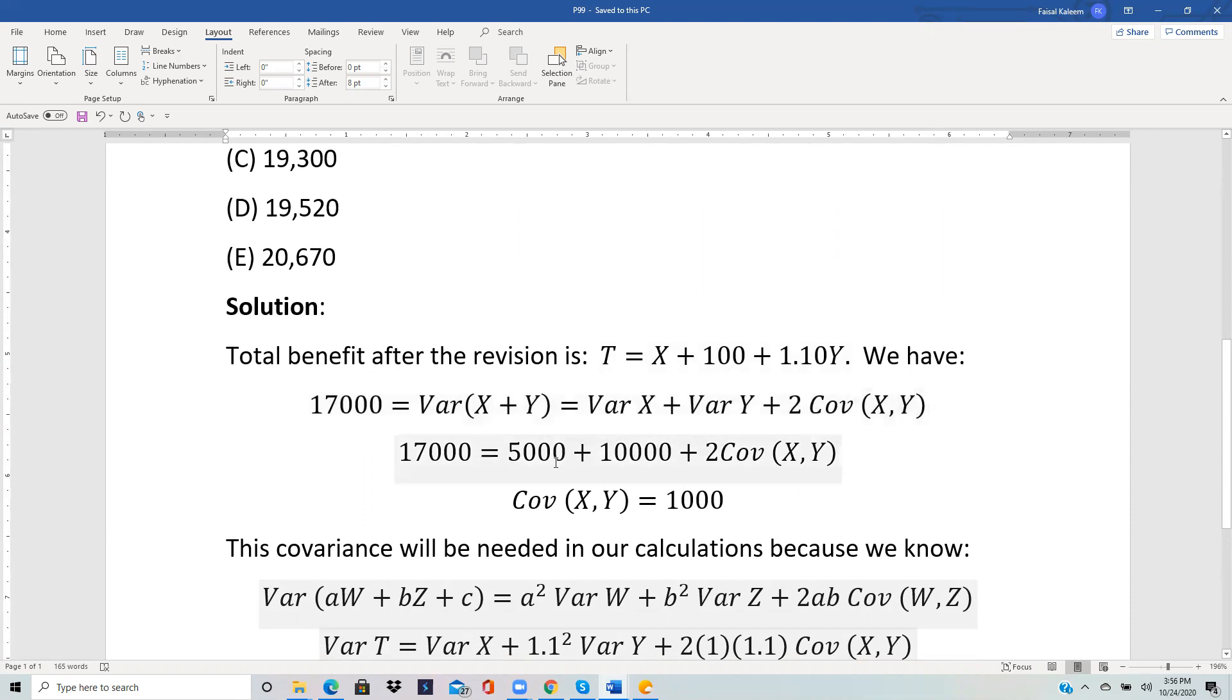And variance of X is 5,000, variance of Y is 10,000. So we substitute those values. So in the end, we get the covariance of X, Y as 1,000.